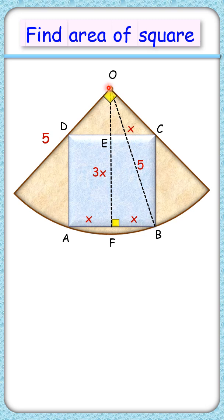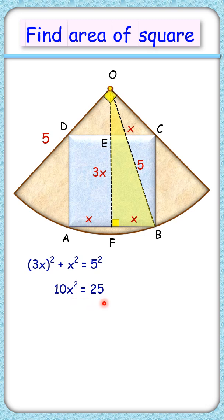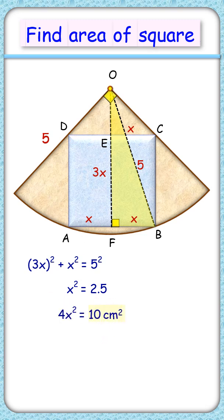In triangle OFB, let's apply the Pythagorean theorem. Solving it gives x² = 2.5 cm. Now the area of the square is 4x², so multiplying by 4 we get the area of the square as 10 cm². And that's our answer.